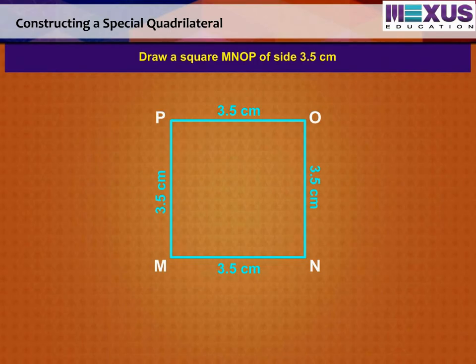Here we can see that only one measurement has been given. Actually, we have many more details with us because the figure is a special quadrilateral, namely, a square.